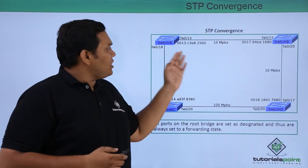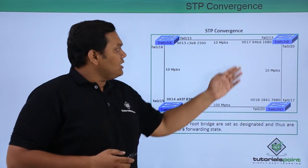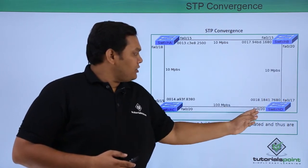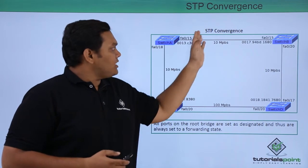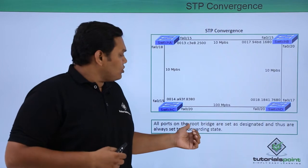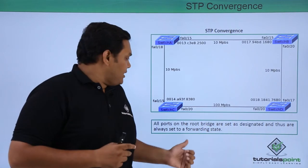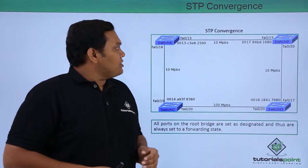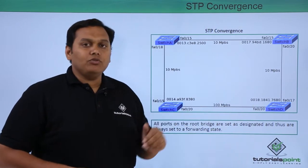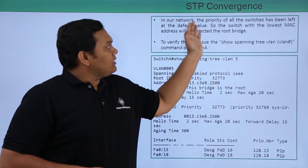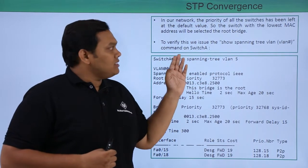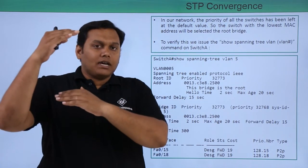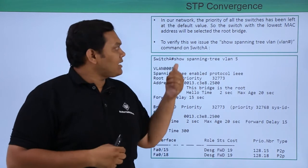Looking at the diagram, we have Switch A, Switch B, Switch C, and Switch D, each with MAC addresses and two interfaces. Since the priority of all switches is left at the default of 32768, the switch with the lowest MAC address will be selected as the root bridge. All ports on the root bridge are set as designated, meaning they will be in the forwarding state.